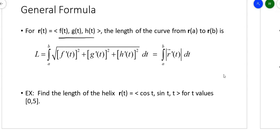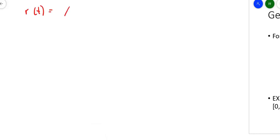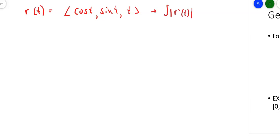Here's a little example: I've got a helix — cosine t, sine t, t — and I want to find the length of the helix on that interval. So if I want the length of that curve, my R(t) is ⟨cos t, sin t, t⟩. What I want is the integral of the magnitude of R′(t).